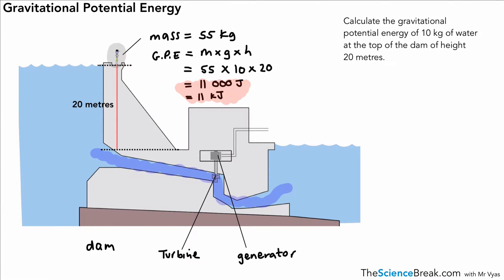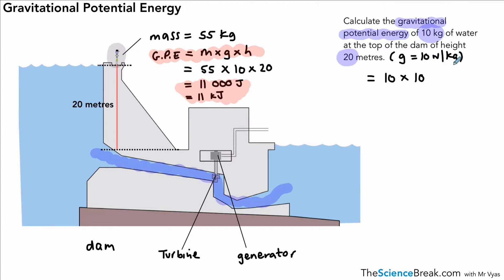One more example for practice: this time we're working out the gravitational potential energy of 10 kilograms of water at a height of 20 metres. Using the same equation — mass 10 times G 10 times height 20 — that gives us 2,000 joules, or 2 kilojoules.